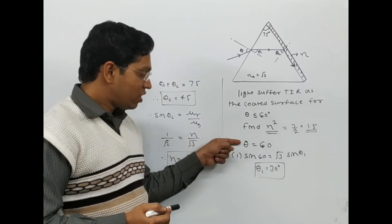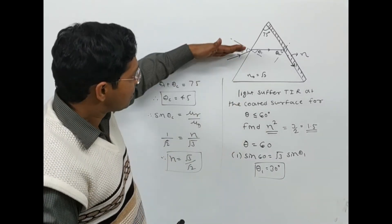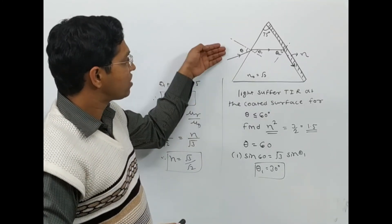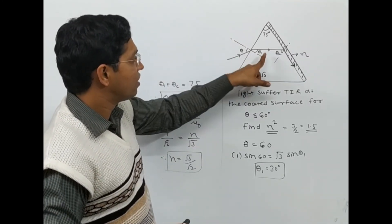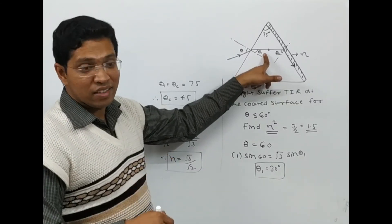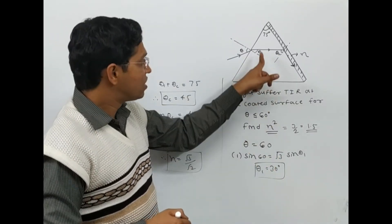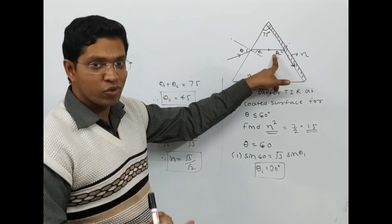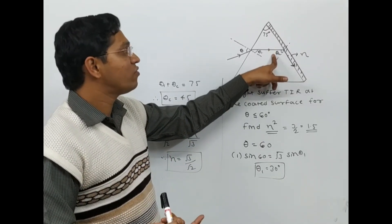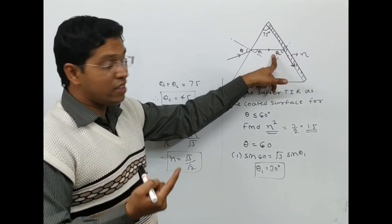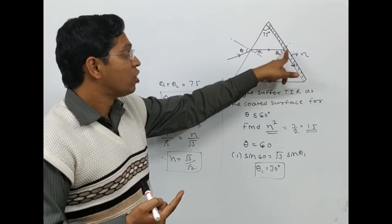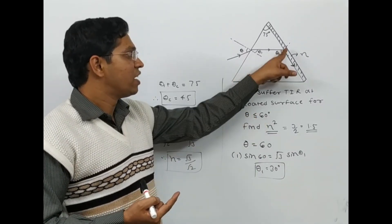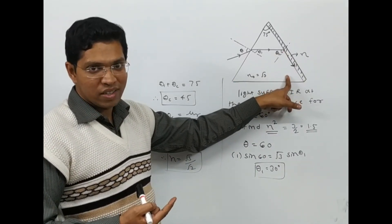We verify: for theta < 60°, the refracted angle inside the prism is less than 30°, making the angle at the coated surface greater than 45°, which exceeds the critical angle. Hence TIR indeed occurs for all theta less than or equal to 60°, confirming the answer.